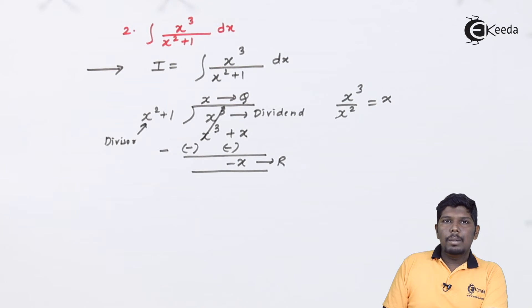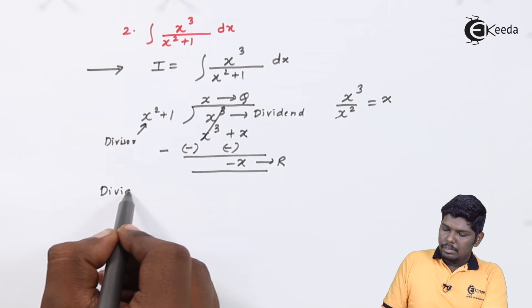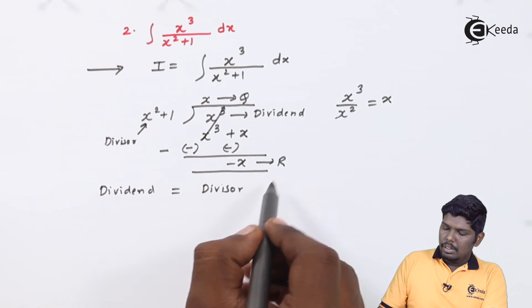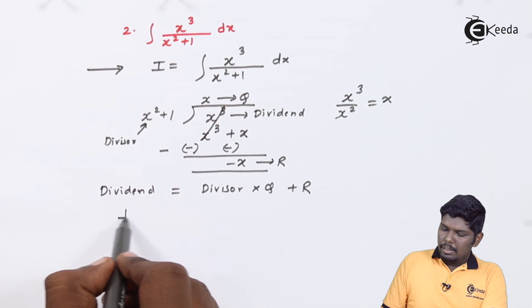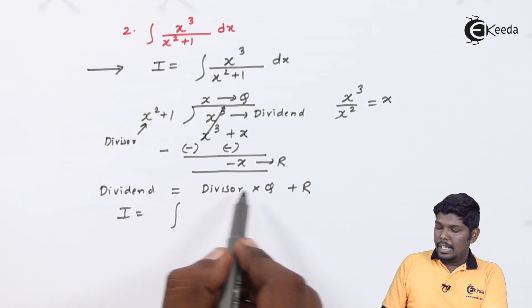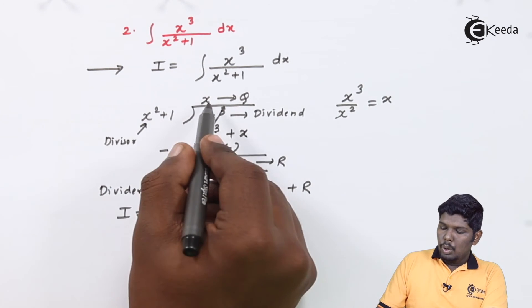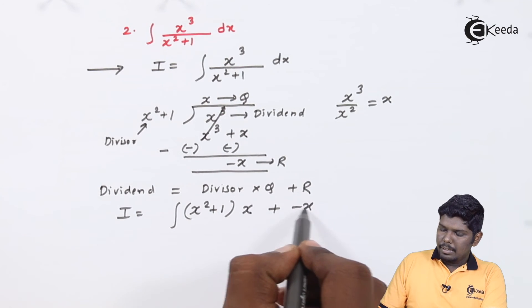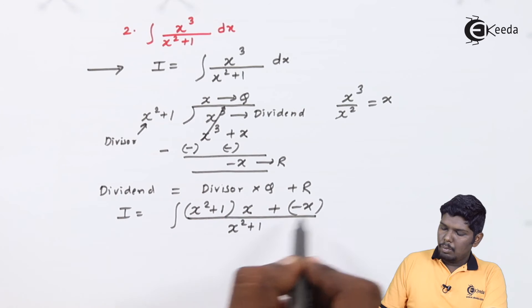We have seen such problems in the previous videos also. In that we have arranged a dividend quotient as divisor into quotient plus remainder. Similarly, our dividend x³ can be written as divisor into quotient. Divisor is x²+1 into quotient is x plus the remainder is minus x divided by the denominator x²+1 dx.